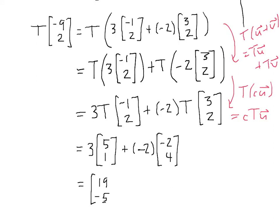So that's our final result, and that shows how if we know the action of a linear transformation on two basis vectors, then we can find its action on any vector in the subspace spanned by those basis vectors.